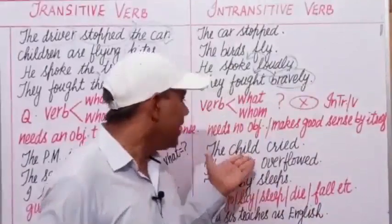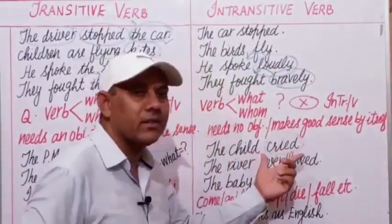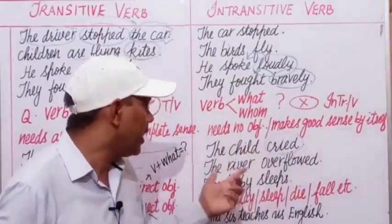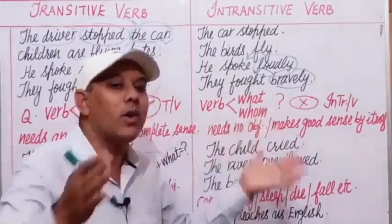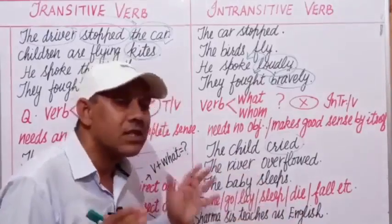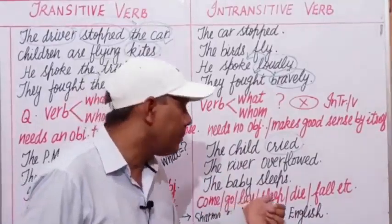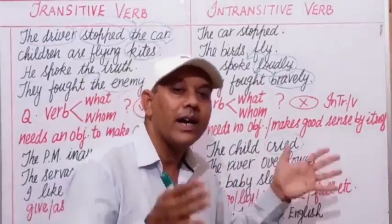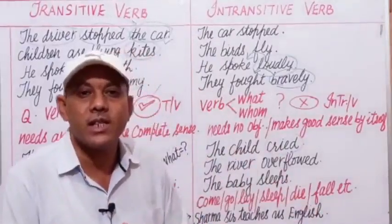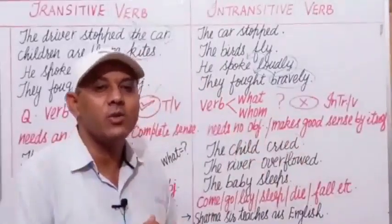'The child cried' — this verb 'cried' needs no object; it has complete meaning by itself. 'The river overflowed.' 'The baby sleeps.' Some verbs — come, go, lay, sleep, die, fall, etc. — need no object to complete the sense of the sentence. That is why these verbs are known as intransitive verbs.